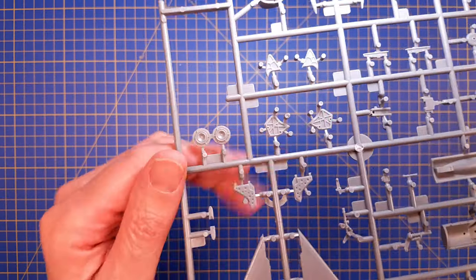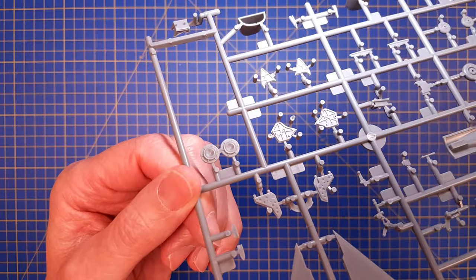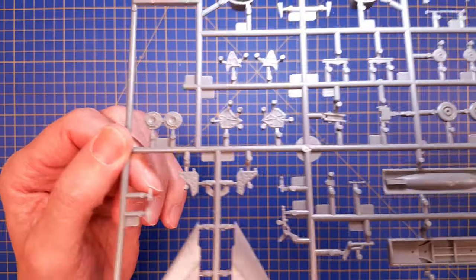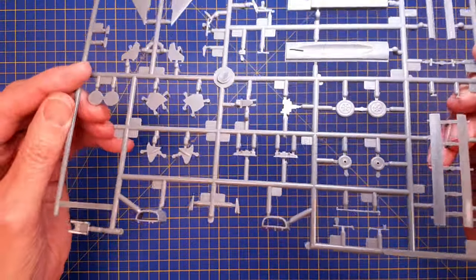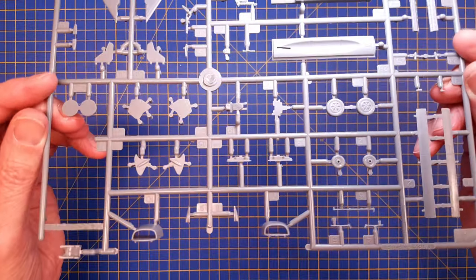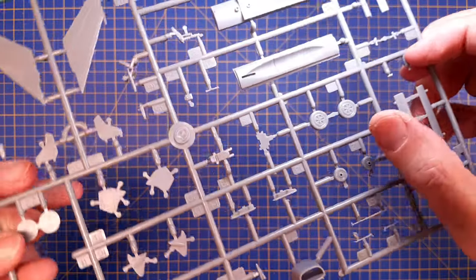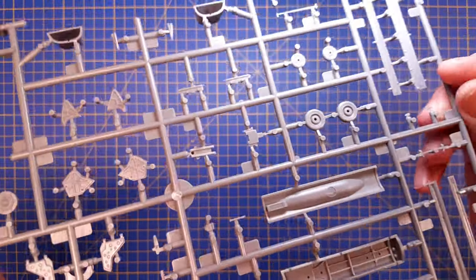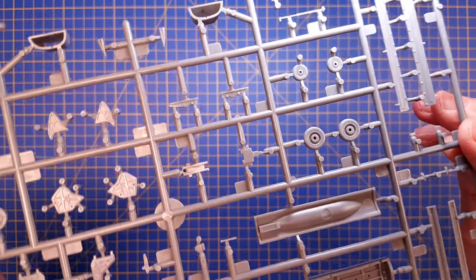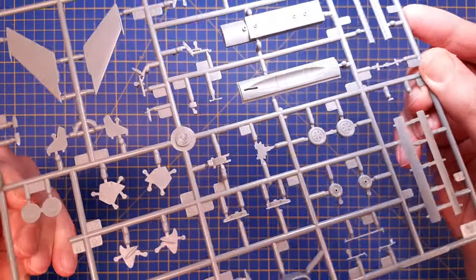I really like that they have added some details on the inside of the landing gear doors. The wheels look nice too - single molded part, but I guess that's nothing unusual for 1/72 scale.